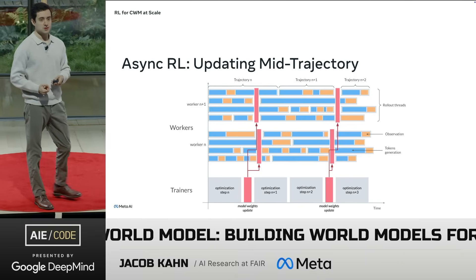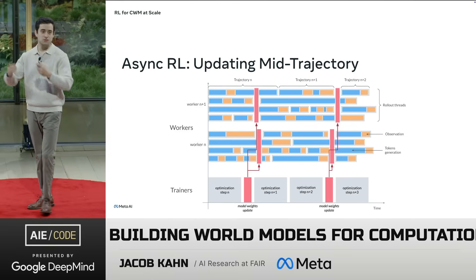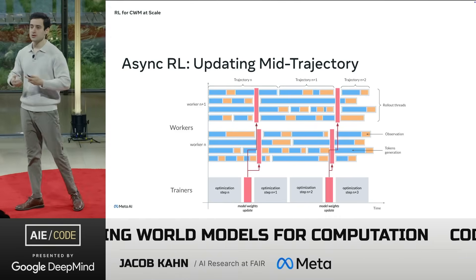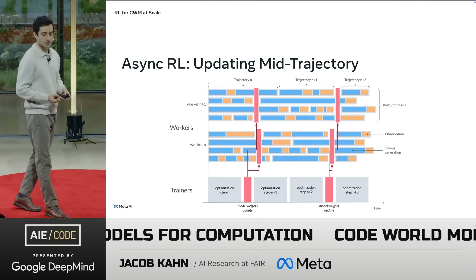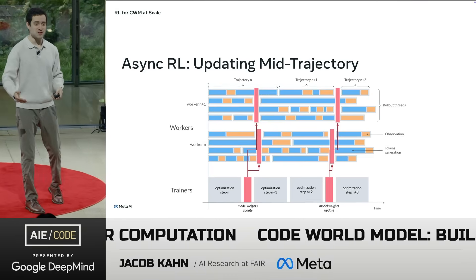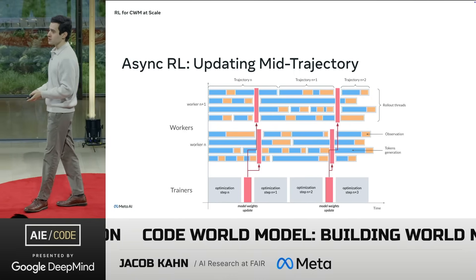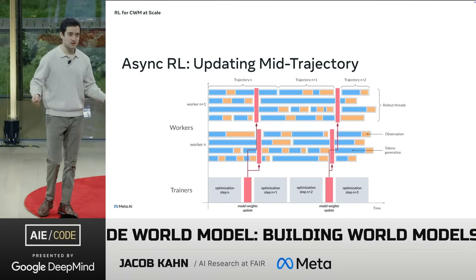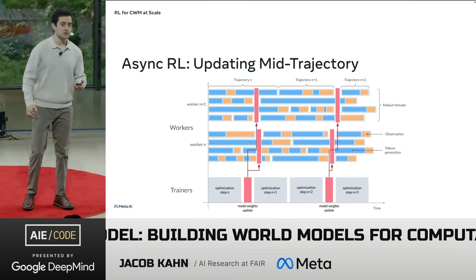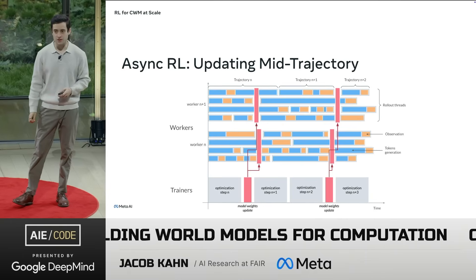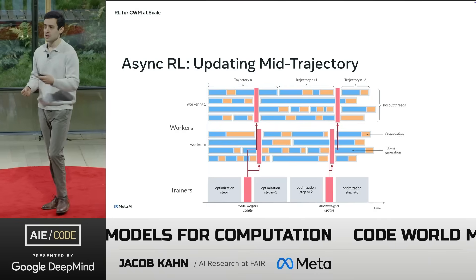One interesting feature is that we're actually updating models mid-trajectory. A model is sampling from the environment, interacting, generating data, executing Bash commands, executing code, getting outputs — and I might actually update that model while it's interacting with the environment. Mid-trajectory, I could swap out the model with a new checkpoint. That trajectory is technically a bit off-policy, but the guarantees we have are quite strong due to the throughput and the amount of data we see, allowing us to take risk with updating the model on the fly.